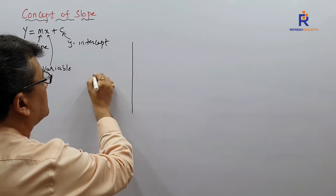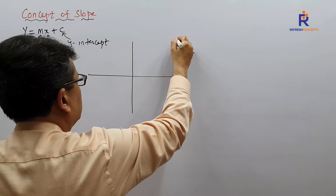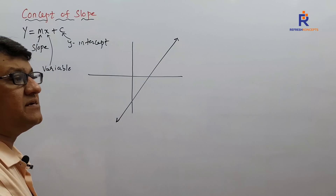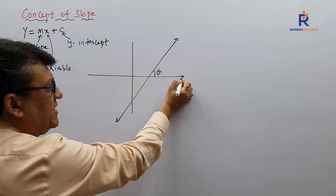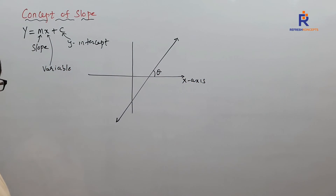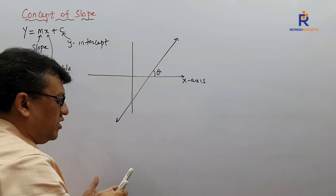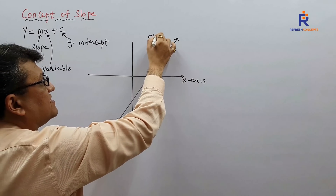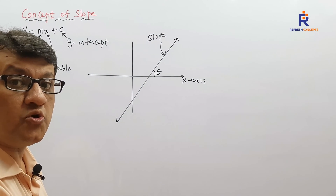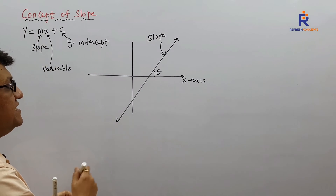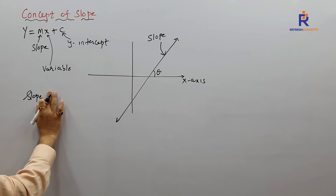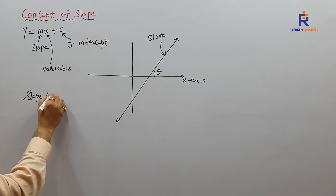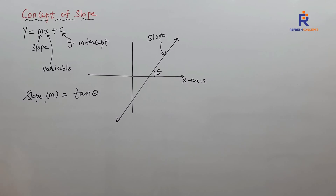Say this is a coordinate axis, and this is an inclined line. Don't you think this particular line is making some kind of angle with the x-axis — theta? This inclined line will always have some kind of slope. Slope is nothing but tan θ. Slope is designated by the letter m, and m is nothing but tan θ.